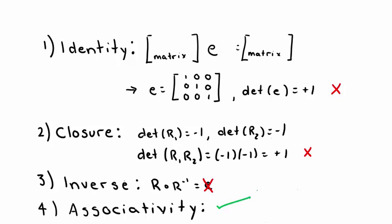Associativity is really the only reliable one here. Thankfully, matrix multiplication is still associative, but that doesn't really mean anything. The other three requirements have failed, so the set of transformations with determinant negative 1 is not a group.